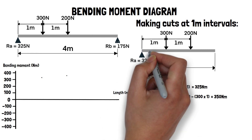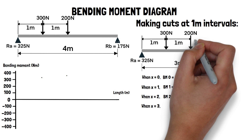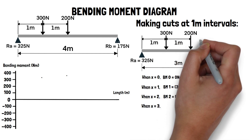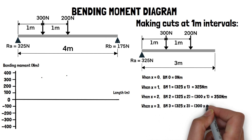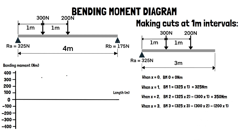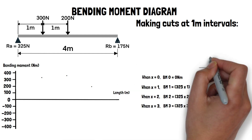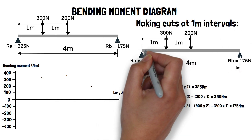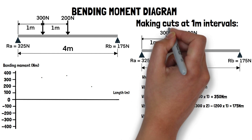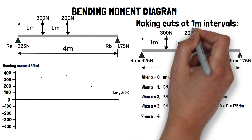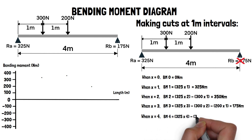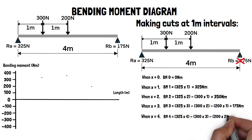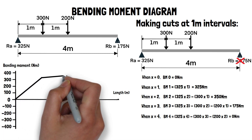When x equals three, the distance of RA is three metres, the 300 newton point load has a distance of two metres, and the 200 newton point load now has a distance of one metre. So our bending moment is calculated by 325 times three, minus 300 times two, minus 200 times one, which equals 175 newton metres. By connecting the dots, we get the finished bending moment diagram for our beam.